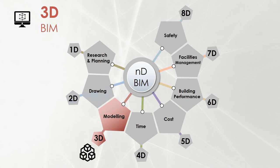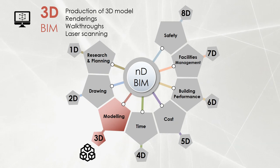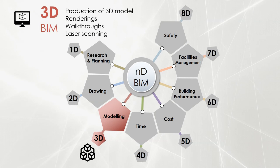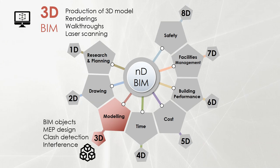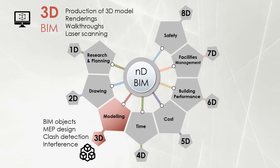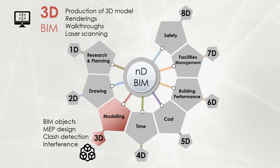3D BIM is about creation of 3D models of buildings, renderings and walkthroughs. It also includes the production of 3D models using point cloud data from laser scanners. The coordination of mechanical, electrical and plumbing data with the 3D architectural models is another aspect of 3D BIM. It also enables clash detection and interference studies between different disciplines.